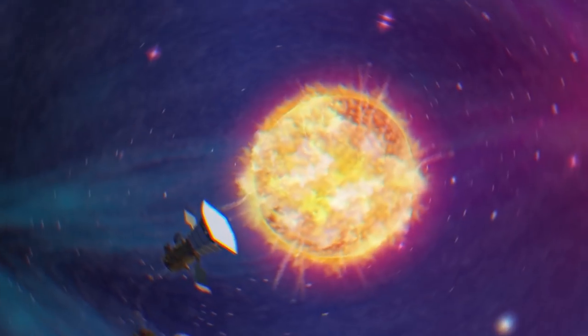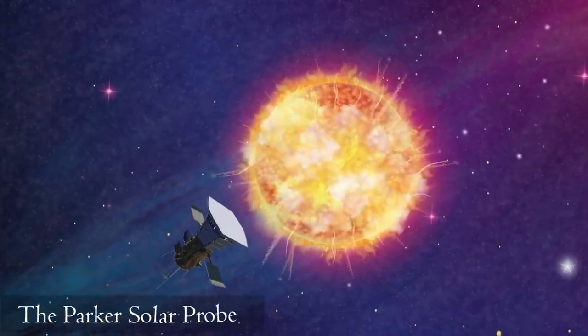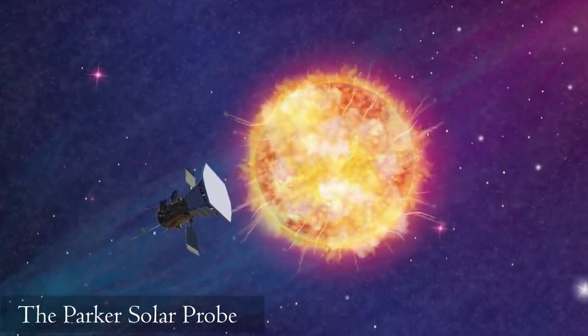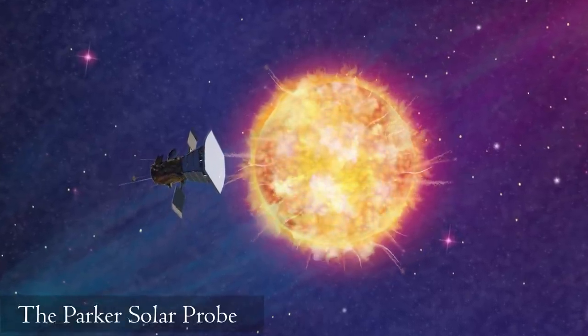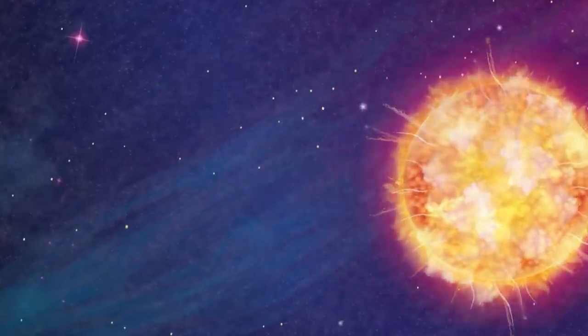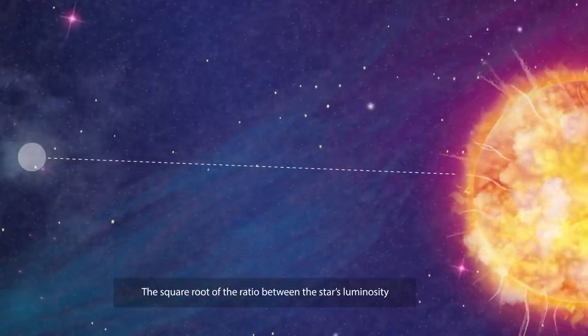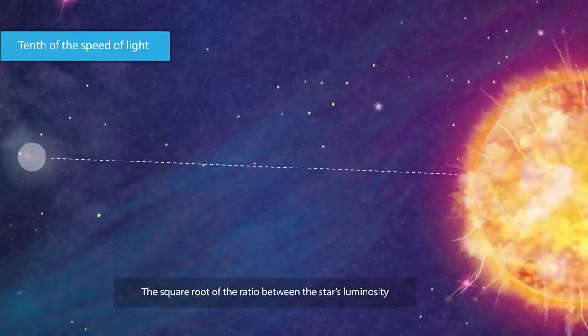The Sun itself is barely capable of accelerating an optimally designed sail to just a thousandth of the speed of light, even if the sail starts its journey as close as ten times the solar radius, the closest approach of the Parker Solar Probe. The terminal speed scales as the square root of the ratio between the star's luminosity over the initial distance and can reach a tenth of the speed of light for the most luminous stars.